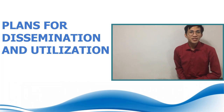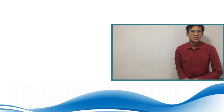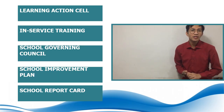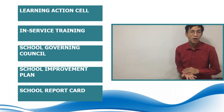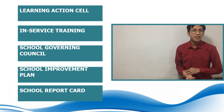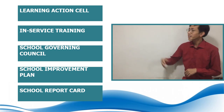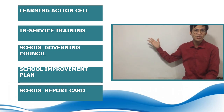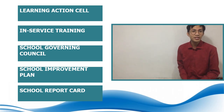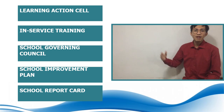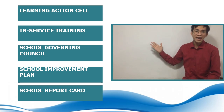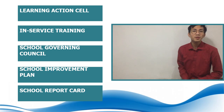Now let's have the plans for dissemination and utilization. There are different ways in how we can disseminate or share the results of our action research. We can disseminate our research in schools through Learning Action Cell (LAC) sessions, the Professional Learning Community (PLC), in-service training, school governing councils, school improvement plans, annual implementation plans, or through school report cards.